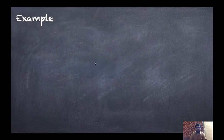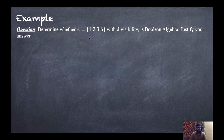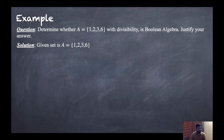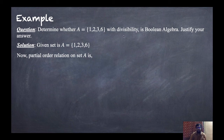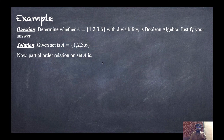Now let us take an example. Determine whether the given set A = {1, 2, 3, 6} under divisibility is a Boolean algebra — justify your answer. To prove it is a Boolean algebra, we need to check that it is a lattice, a complemented lattice, and a distributive lattice. We will first construct the relation, then the Hasse diagram, then verify each condition.